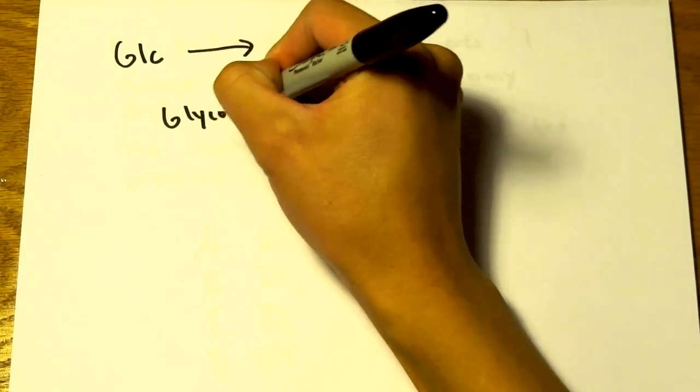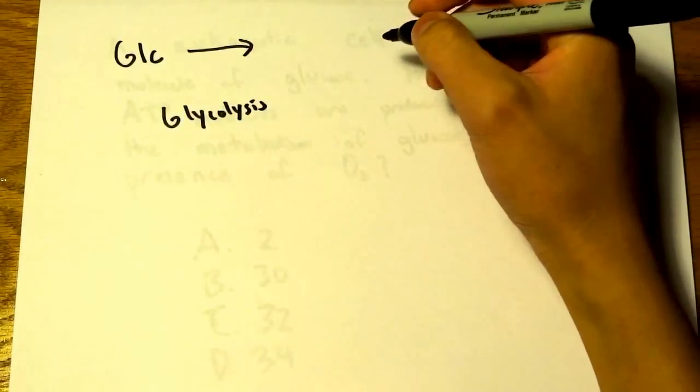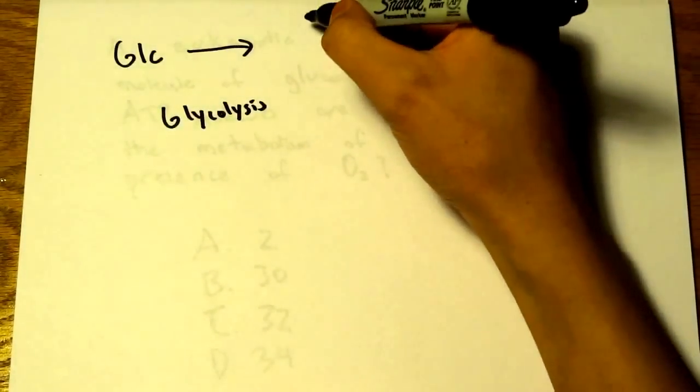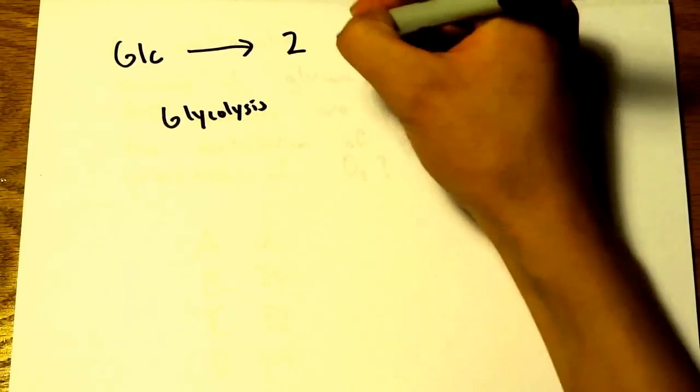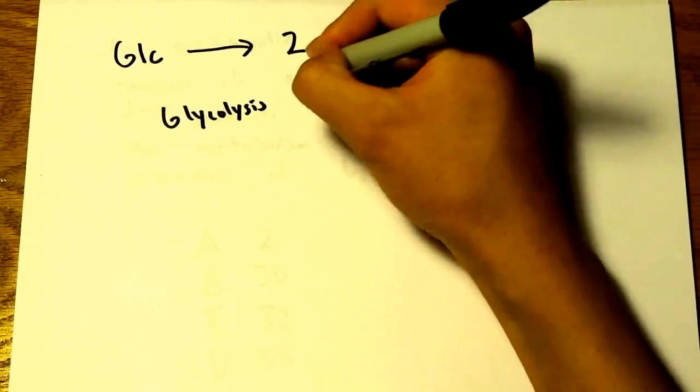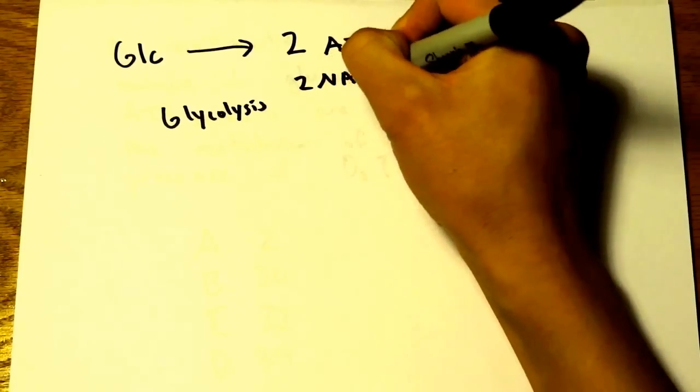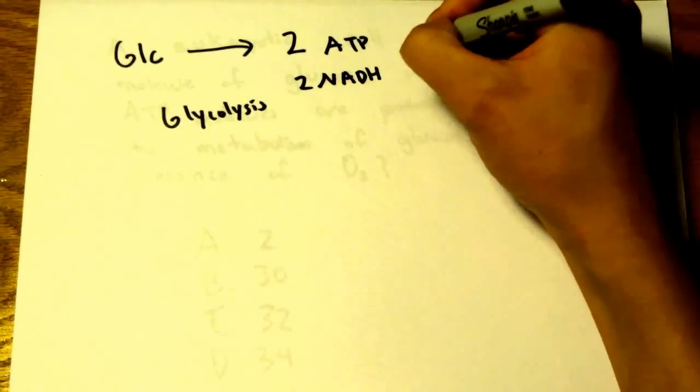For glycolysis, the enzymes aren't as important - we just need to know the end products. The end products of glycolysis are 2 ATP, 2 NADH, and 2 pyruvate.